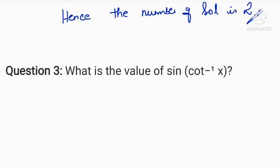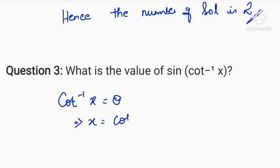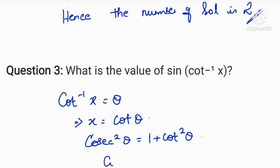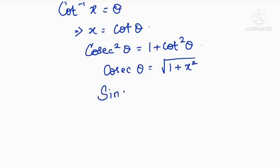The next question asks for the value of sin of cot inverse of x. Let us equate cot inverse of x to some angle theta, which implies x equals cot theta. We know that cosecant squared theta equals 1 plus cot squared theta, so cosecant theta equals root of 1 plus x squared.